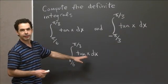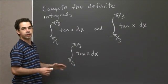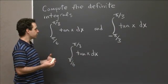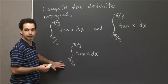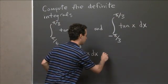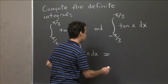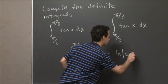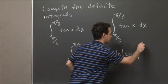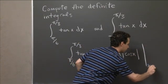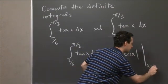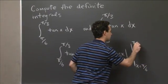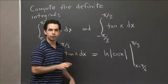So the fundamental theorem of calculus says that the value of this definite integral, in order to compute it, we just take the difference of that antiderivative at pi over 3 and at pi over 6. So by the fundamental theorem of calculus, this is equal to ln of the absolute value of cosine x for x between pi over 6 and pi over 3.